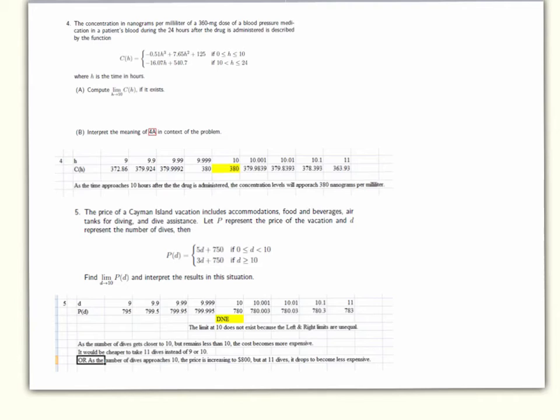So this is the last part of the lab manual. I picked a couple of the application ones that we could look at. Number 4, the concentration in nanograms per milliliter of a 360 milligram dose of a blood pressure medication in a patient's blood during the 24 hours after the drug is administered is described by the function. And I've given you a piecewise function there where H is the time in hours. And I've asked you to find the limit as the hours approaches 10. So we're looking at 10 hours. And there I've added if it exists, because the whole idea is, limits, if they exist at a value, they have to be the same as we approach it from the left and from the right. And then I've asked you to interpret it.